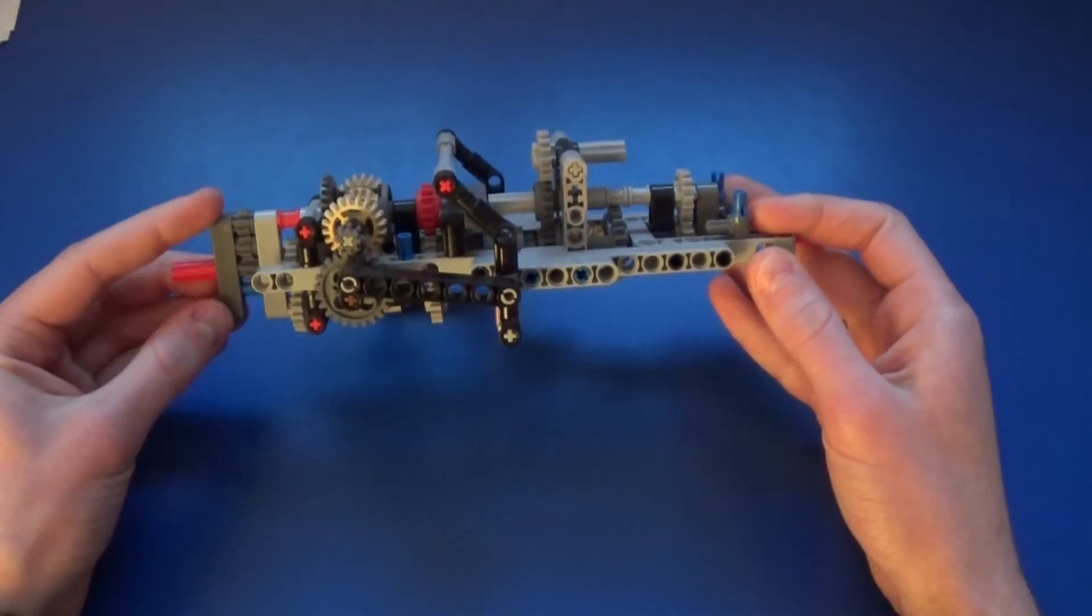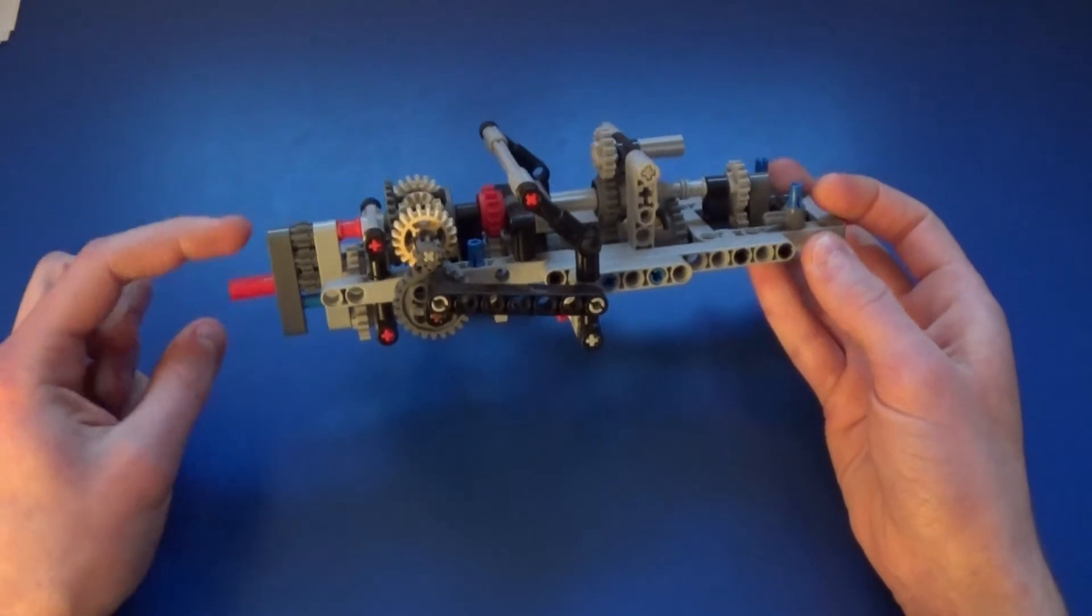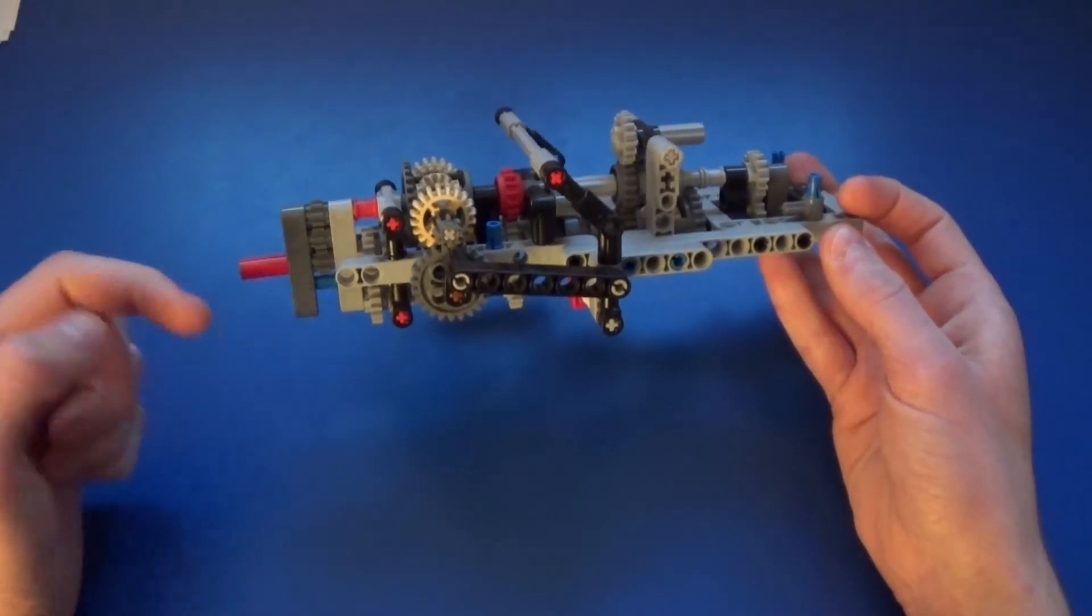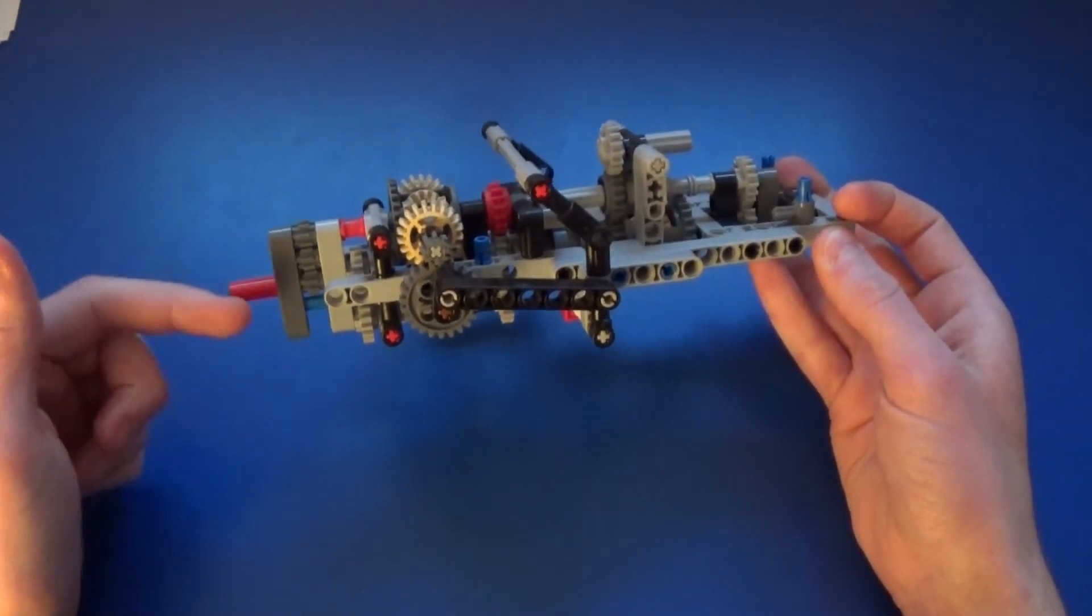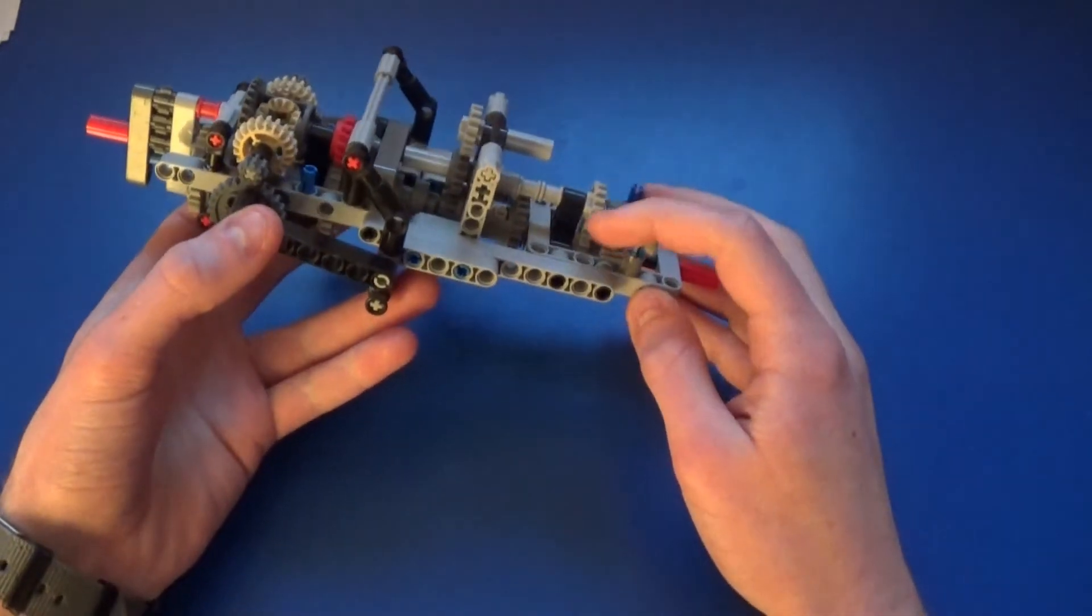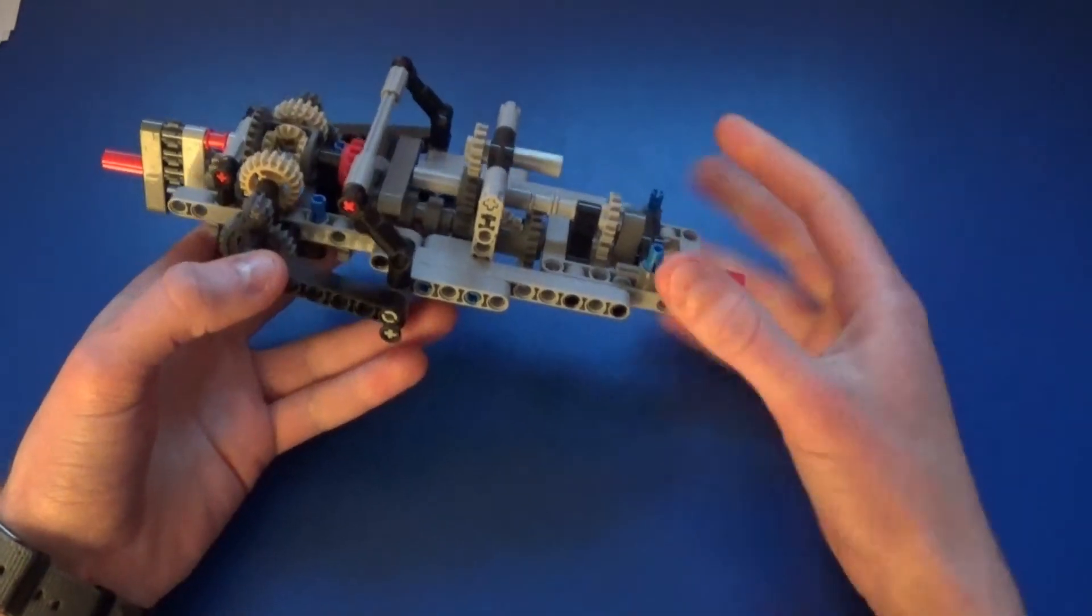That's because there are three gears here, which means that this will be spinning in the same direction as this one, whereas on this side there are only two gears, which means the spin is reversed.